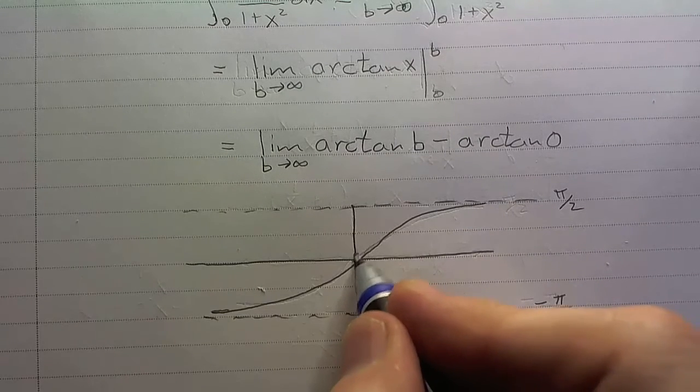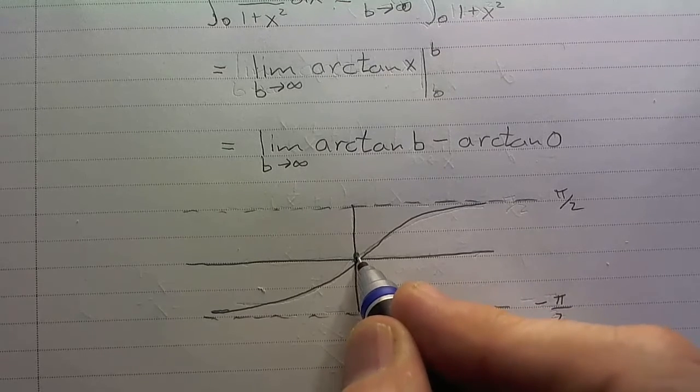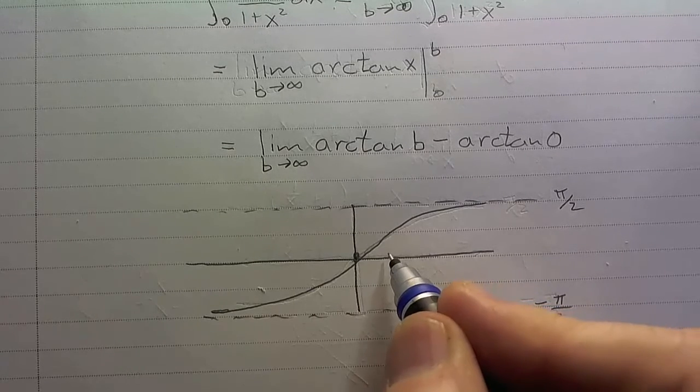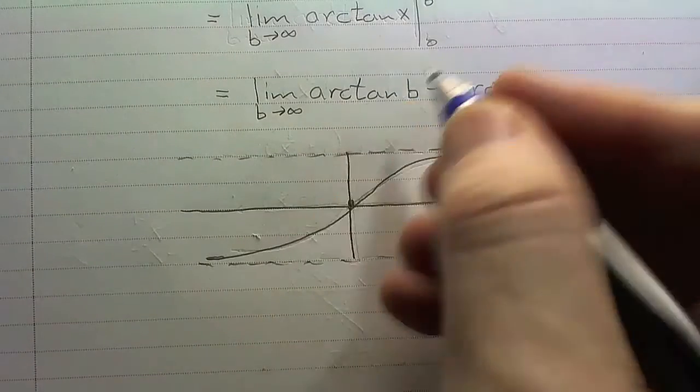Now, notice here at 0 – I didn't do a very good job of sketching that there – but remember that arctan of 0 is 0. So we can use that now and evaluate both parts of this.